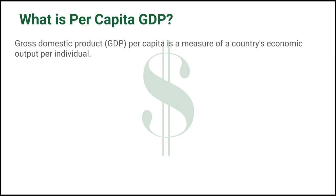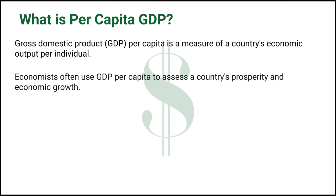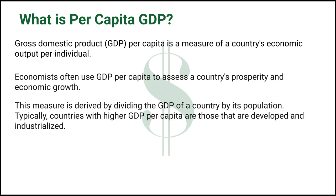Gross domestic product per capita is a measure of a country's economic output per individual. Economists often use GDP per capita to assess a country's prosperity and economic growth. This measure is derived by dividing the GDP of a country by its population. Typically, countries with higher GDP per capita are those that are developed and industrialized.